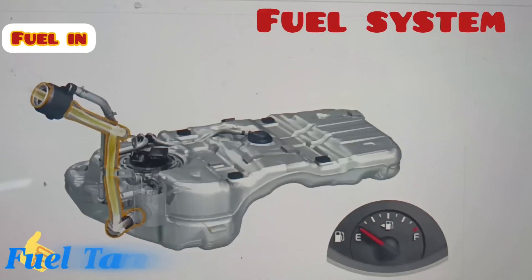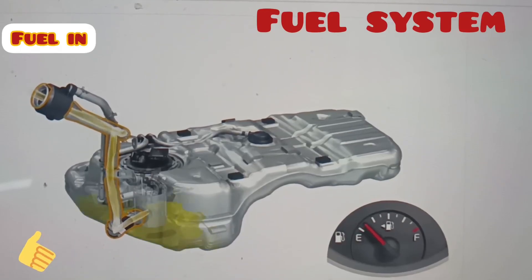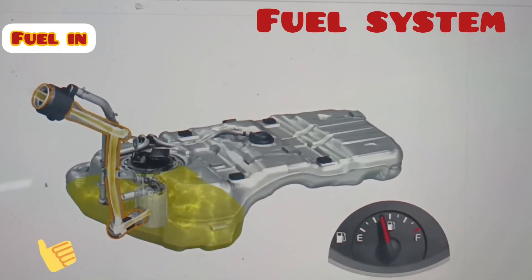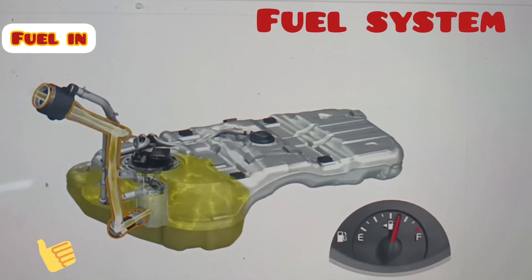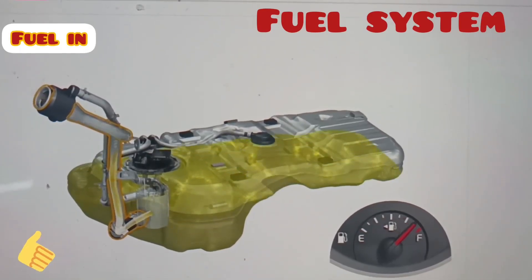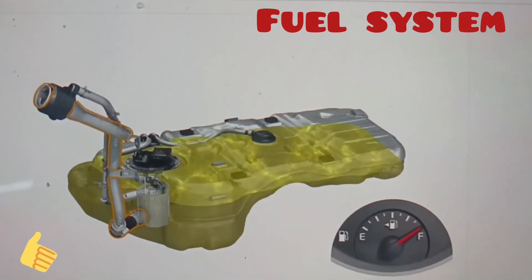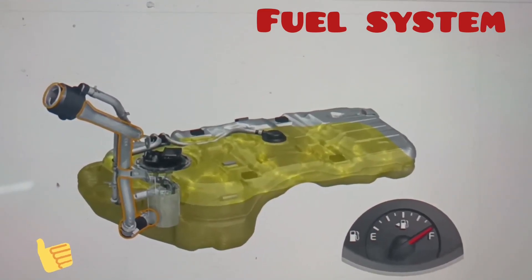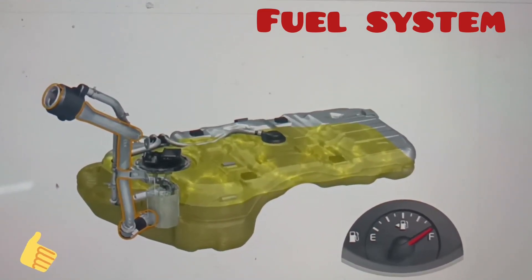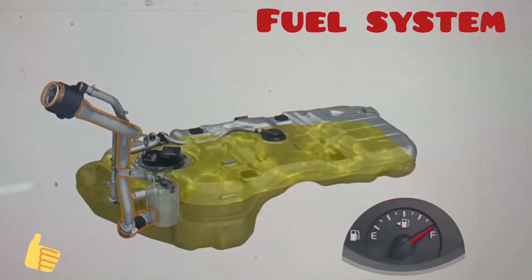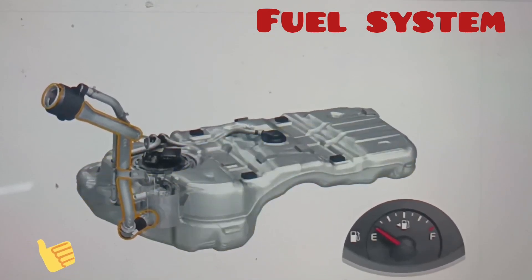The fuel tank is a sealed reservoir usually made of plastic or steel that safely contains gasoline or diesel. An intake pipe with a pump draws fuel, while a float level sender indicates how much is left on the fuel gauge. An outlet pipe directs pressurized fuel to the engine, and vents allow airflow so fuel flows easily.